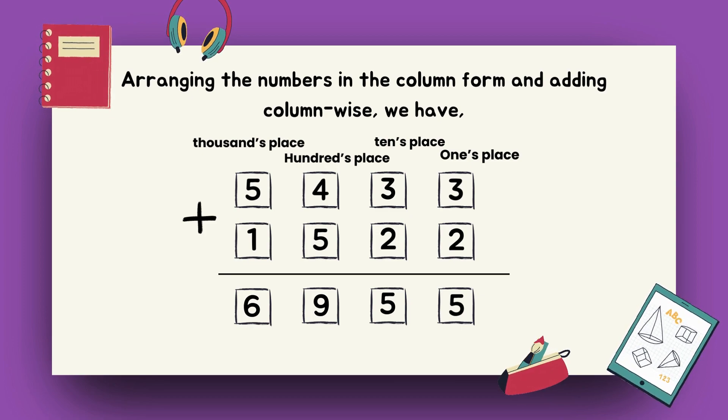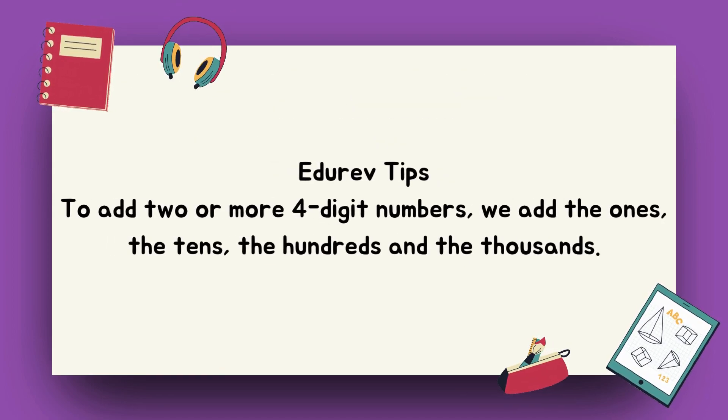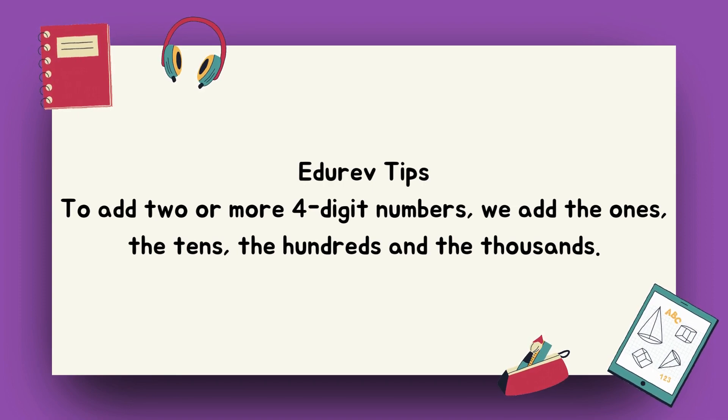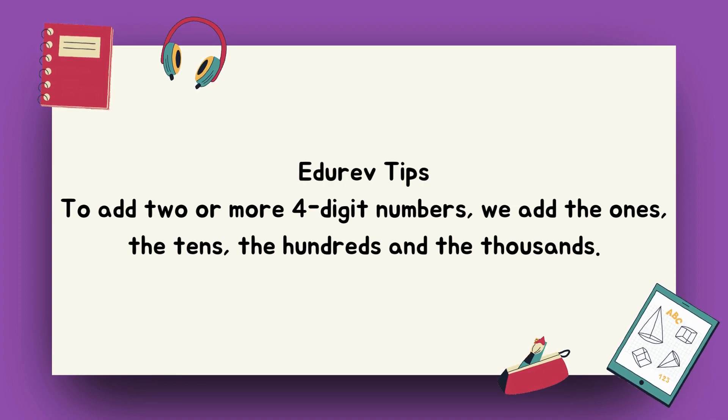Thus, 5433 plus 1522 is equal to 6955. A tip to add two or more four-digit numbers: we add the ones, the tens, the hundreds and the thousands.